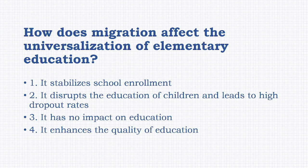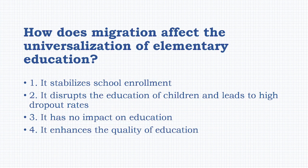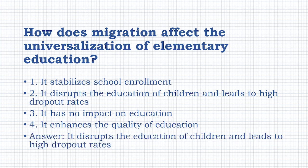How does migration affect the universalization of elementary education? Options: it stabilizes school enrollment, it disrupts the education of children and leads to higher dropout rates, it has no impact on education, it enhances the quality of education. The answer is: it disrupts the education of children and leads to higher dropout rates.